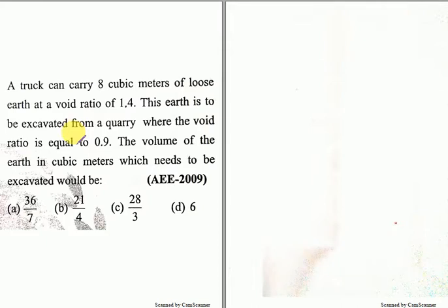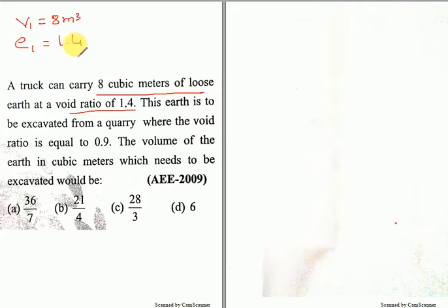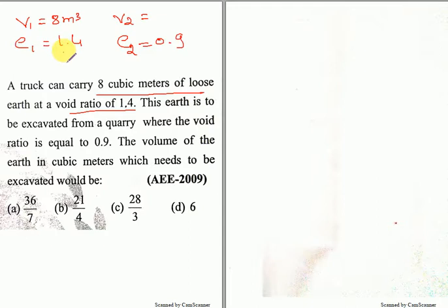A truck can carry 8 cubic meters of loose earth at a void ratio of 1.4. So I take V1 equal to 8 meter cubes and void ratio E1 equal to 1.4. This earth is to be excavated from the quarry where the void ratio is equal to 0.9 — I take E2 as 0.9. The volume of earth in cubic meters which needs to be excavated — when the void ratio is 1.4 the volume is 8 meter cubes, so when the void ratio is 0.9, what is the volume to be excavated?